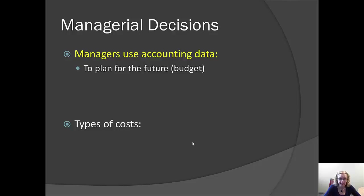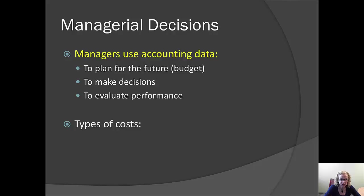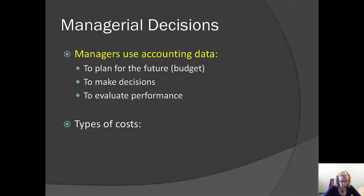In addition, managers can use accounting information to make decisions by comparing how much revenue or cost the firm would have under different options and deciding which they prefer. Finally, managers can use accounting information to evaluate performance — by looking at past decisions and comparing how we thought the future would be to how it actually was, we can assess how good we were at making predictions and learn to be better predictors in the future.